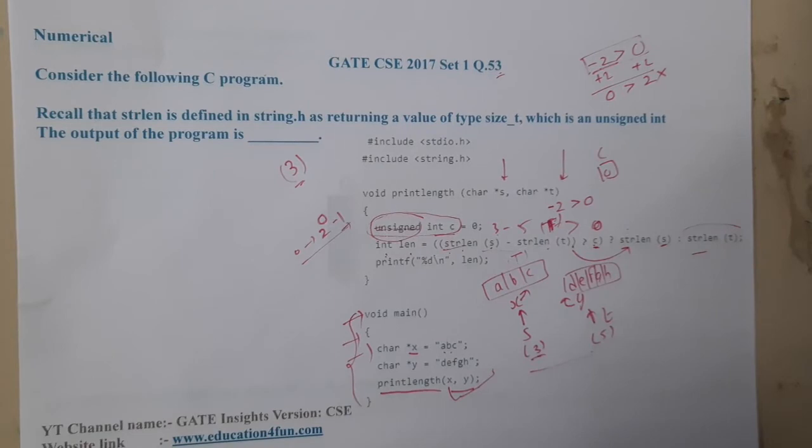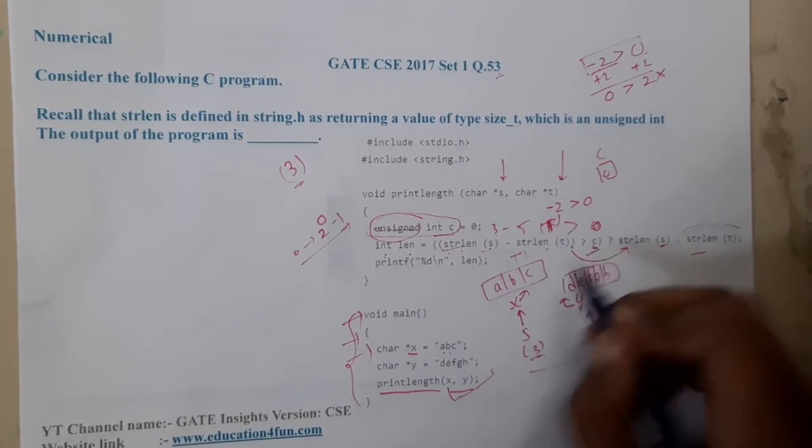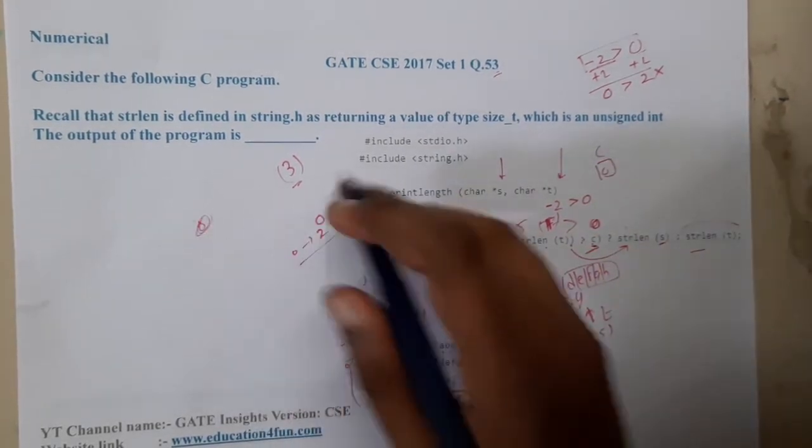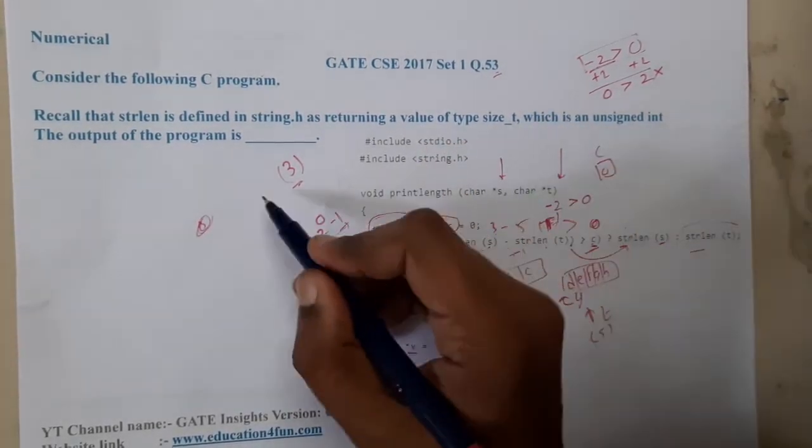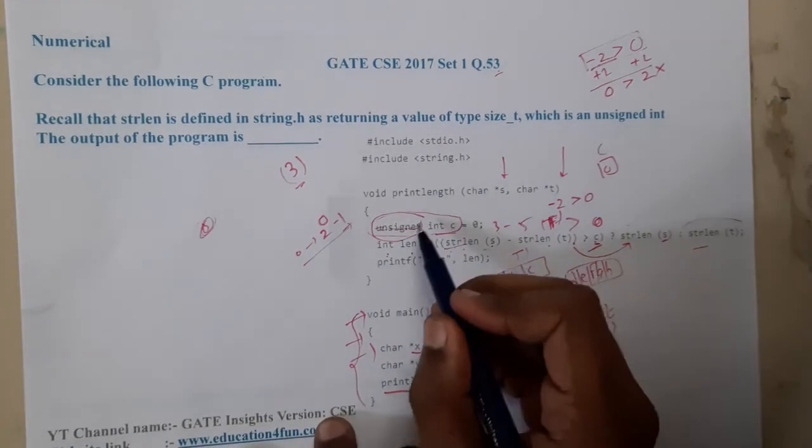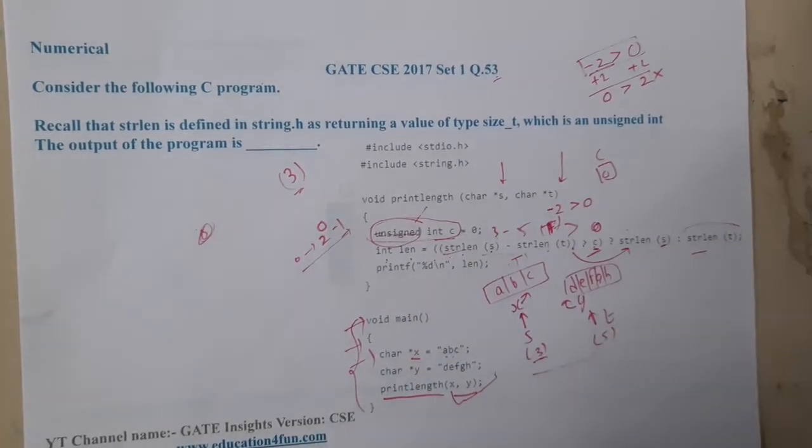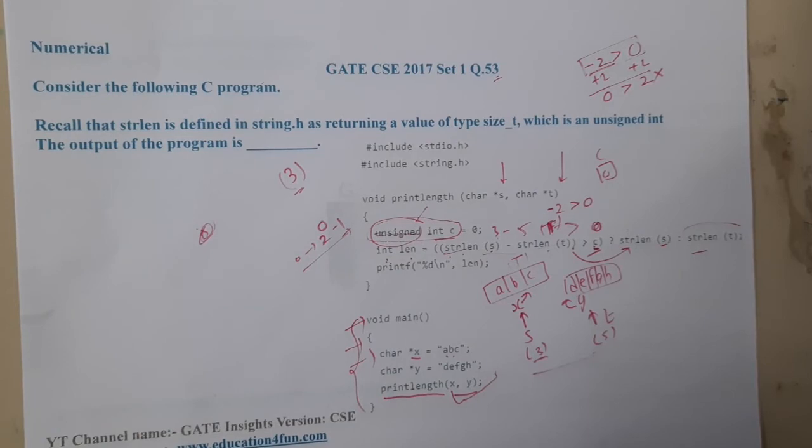I hope everyone got a clear idea, like how the examiner will try to confuse us. This is a trick which he played with us. I think most of around 50 percent of the members who attempted this question or solved the code will keep five only. Very rare students will be knowing that it is unsigned, so the value might change. I hope everyone got a clear idea.